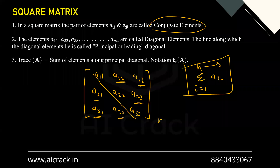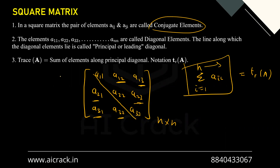The trace of matrix A is defined as the sum of elements along the principal diagonal — that is, sigma of aii where i goes from 1 to n, and n is the order of the square matrix. Importantly, you cannot define the leading diagonal, principal diagonal, or trace for any matrix other than a square matrix — conjugate elements, diagonal, and trace are all defined for square matrices only.